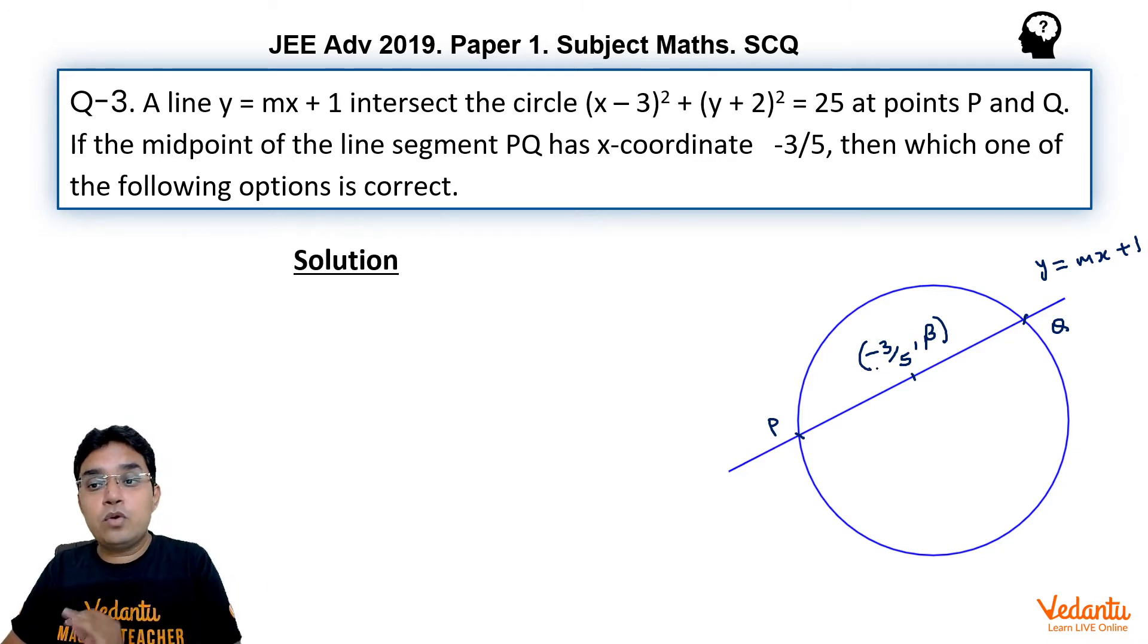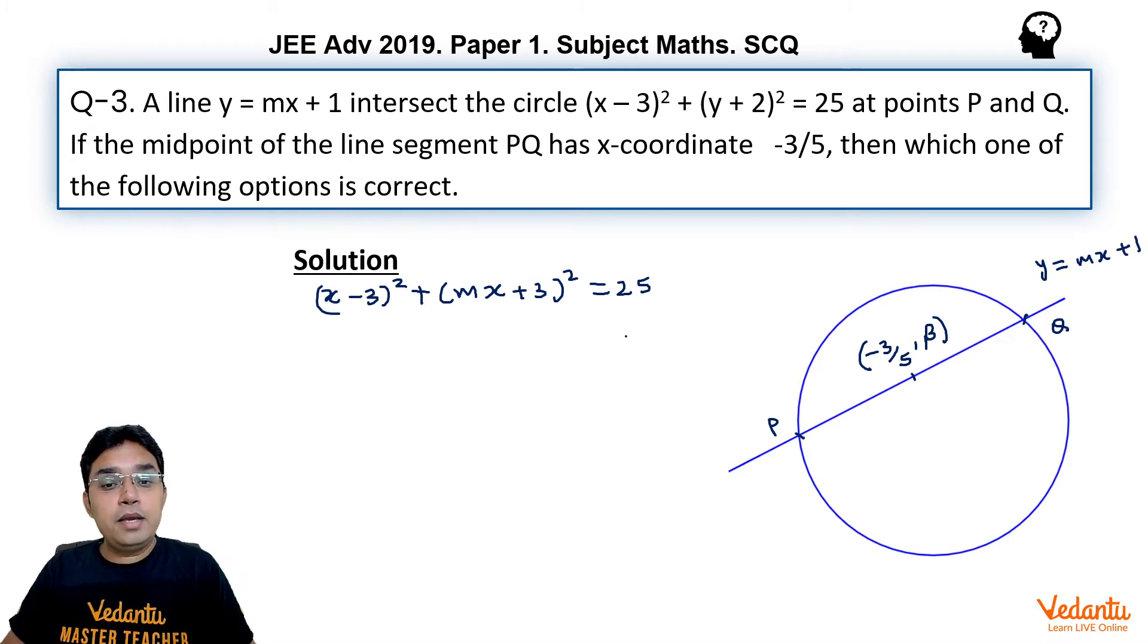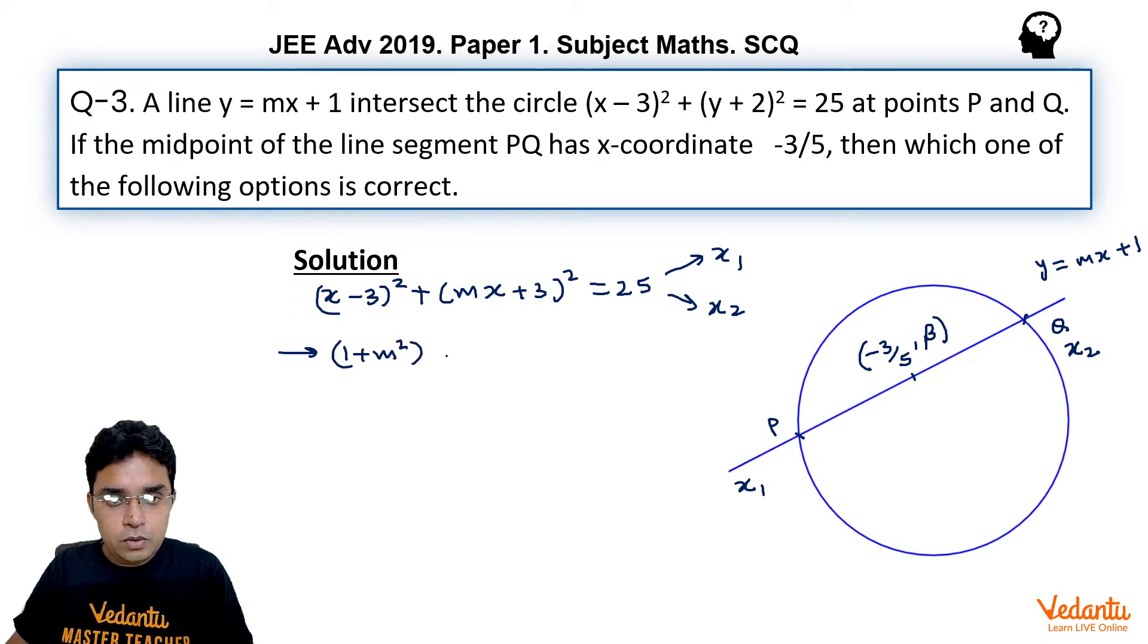Now one of the methods could be that you put this y equals mx plus 1 in the equation of circle. We get (x minus 3) whole square plus (mx plus 1 plus 2), so (mx plus 3) whole square equals 25. Now this is quadratic in x only which should give roots x1, x2 which will be the x-coordinates of P and Q. Now if we open this quadratic, if we open these brackets, we get (1 plus m square) into x square plus (6m minus 6) into x minus 7 equals 0.